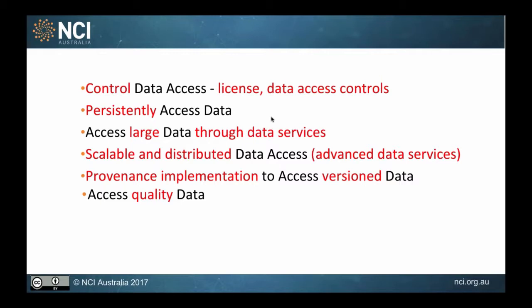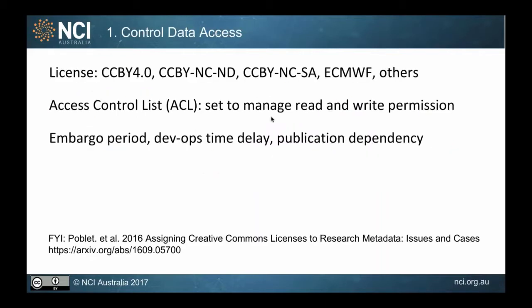There are six points I want to address today about data access. First, how do we control data access. Second, how we use a persistent identifier to manage data access. Then I'll talk about two main data services we offer at NCI: THREDDS and GSKY, which is a more scalable distributed data server. Finally, I'll cover data versioning and data quality.